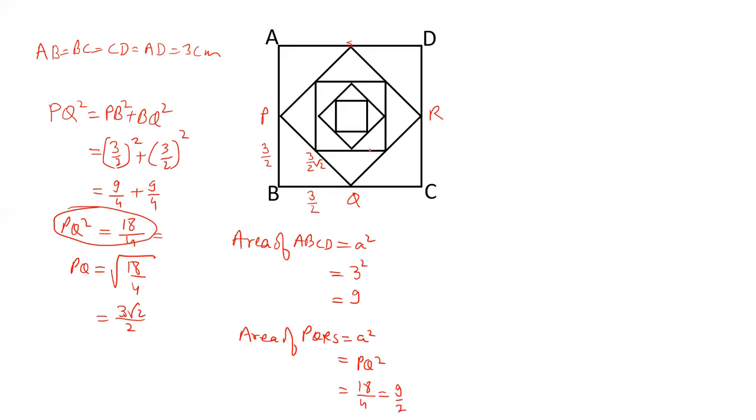So when we join the midpoint of ABCD, the area comes out to be half of ABCD. So we can say that area of ABCD is 9 and area of PQRS is 9 by 2.